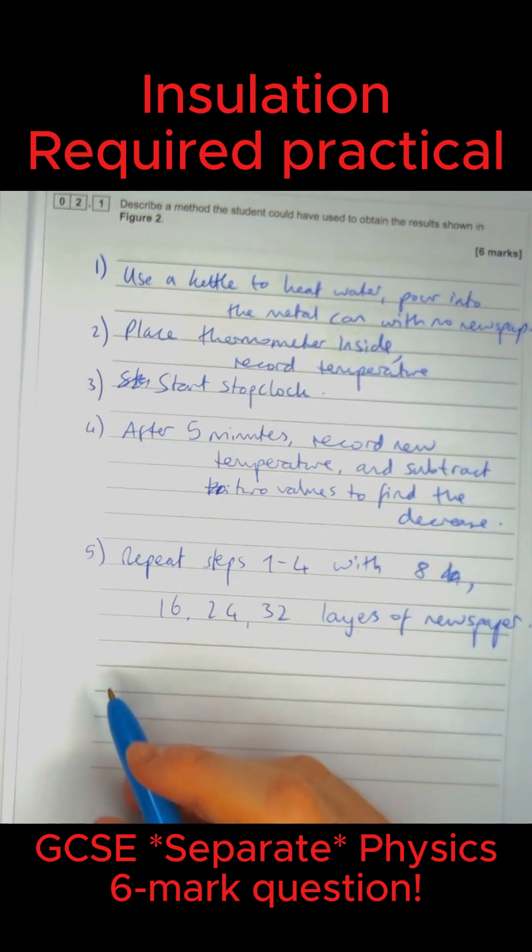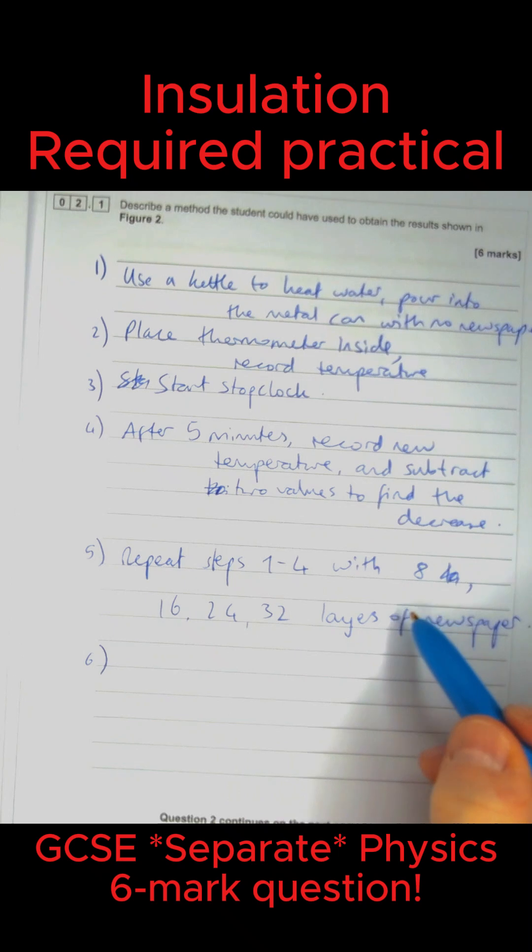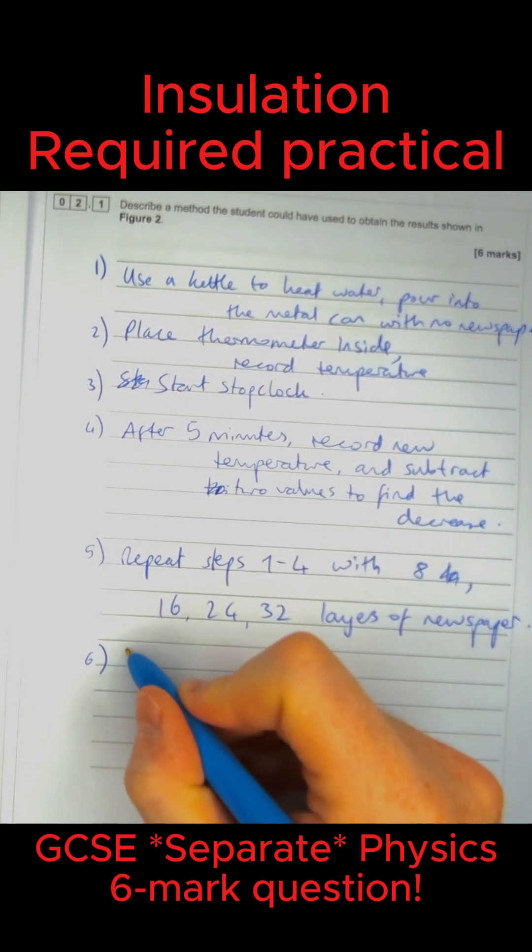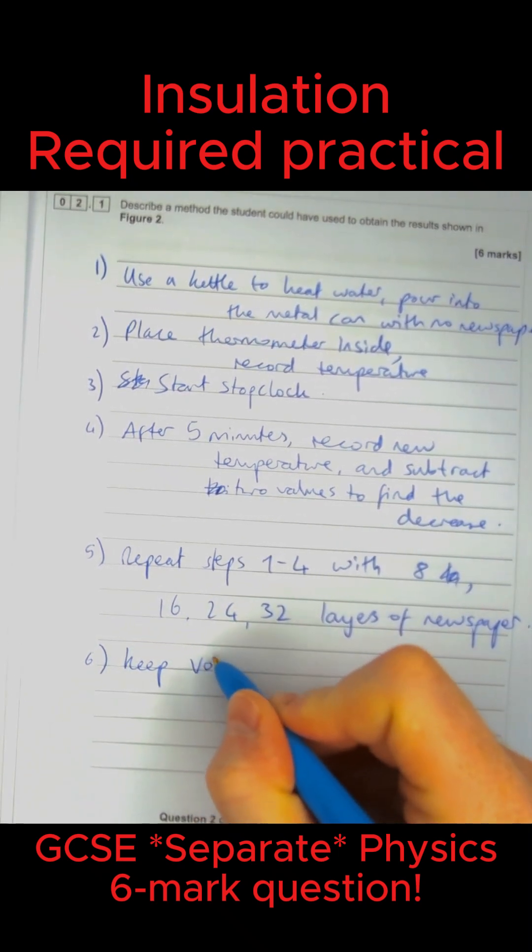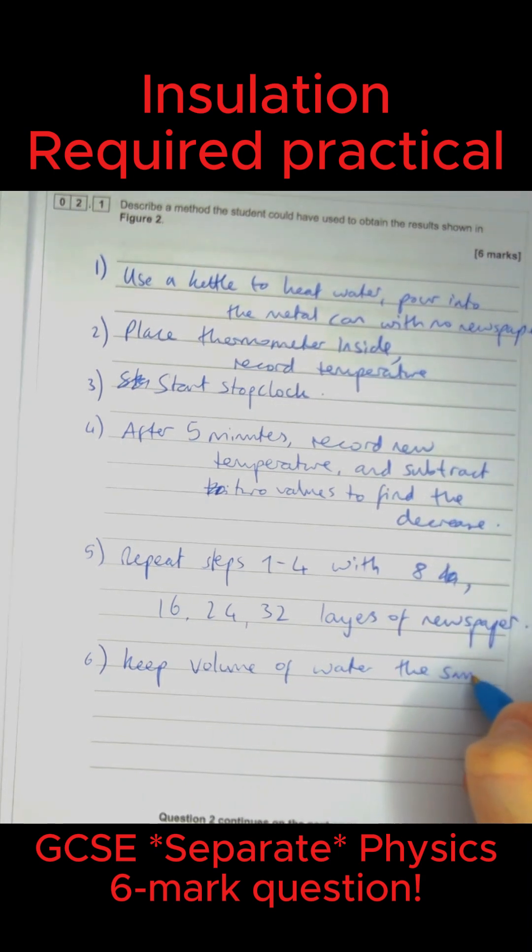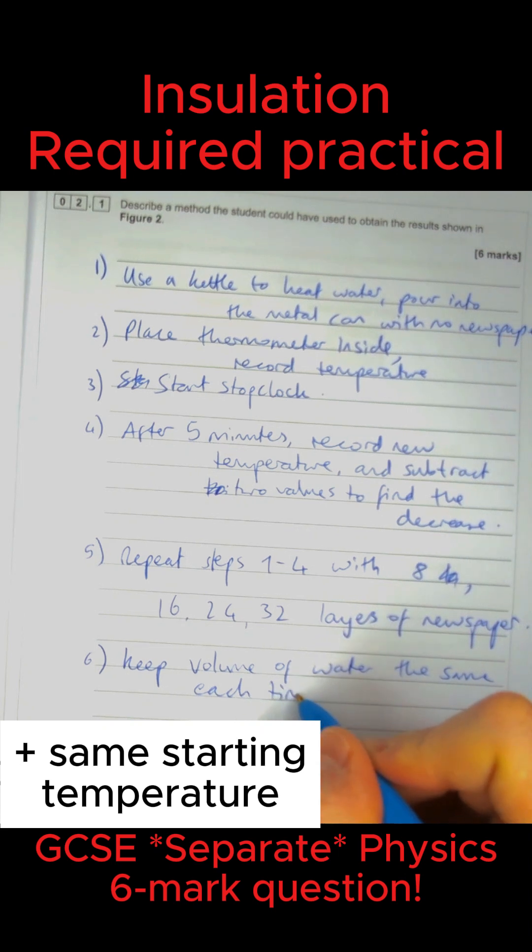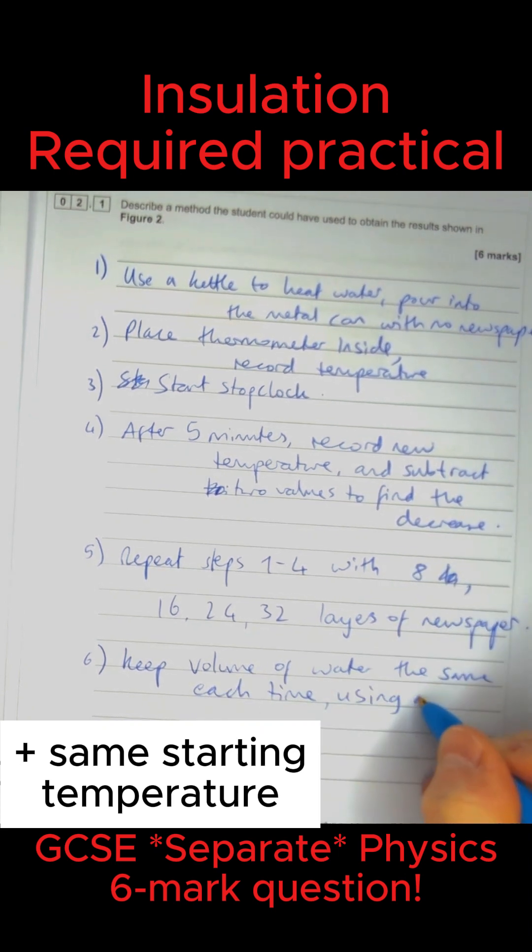Now something this question might look for is control variables. We're changing the number of layers of newspaper and measuring the temperature decrease. Make sure to keep the volume of water the same each time using a measuring cylinder—a beaker would be fine, but measuring cylinder is better. You could put that at the start of the method if you wanted.